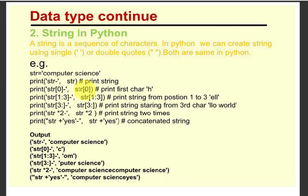Now see the next data type, that is the string in Python. How you can assign a variable as a string. A string is a sequence of characters. In Python, we can create a string using single quotes or double quotes. Both are the same in Python. If you want to assign a variable as a string, you have to use single or double quotes. Both are treated as a string in Python.